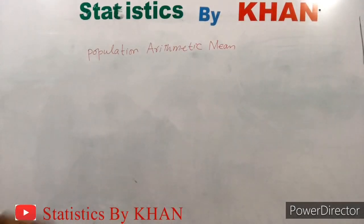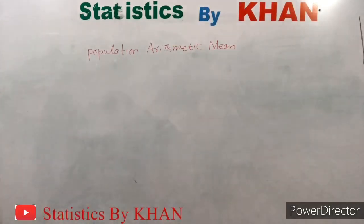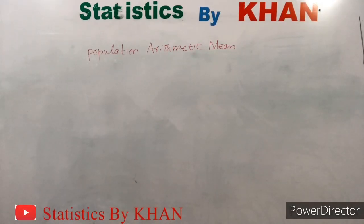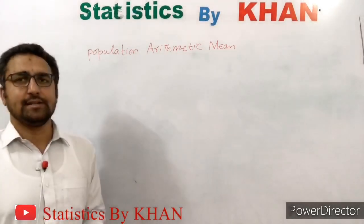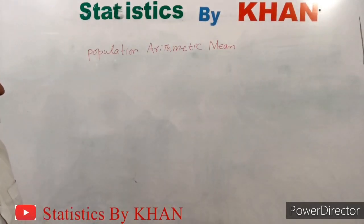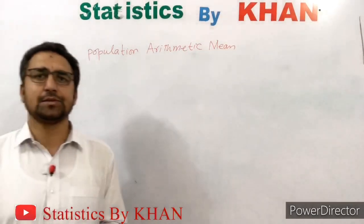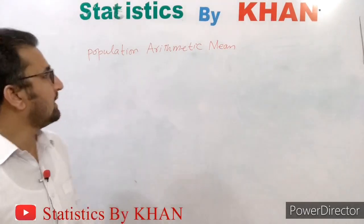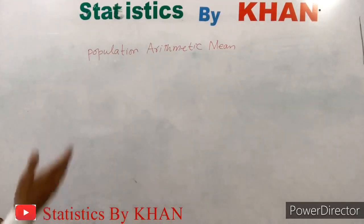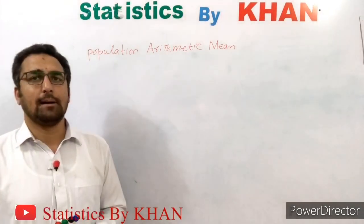If you focus on the terms involved in the name 'population arithmetic mean,' one can automatically guess what it means — it means the arithmetic mean calculated from population data. Population data refers to all the units of interest, all those units about which we want to know something. If we select some of those units, that is called a sample. The arithmetic mean calculated from population data is called the population arithmetic mean.